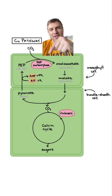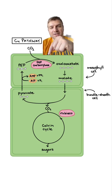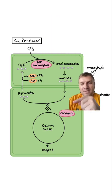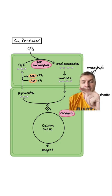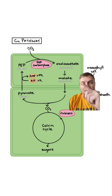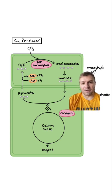Here's another way of looking at it. You can see the PEP carboxylase, which is going to make that four-carbon molecule, which is why it's called C4. CO2 will be produced when malate is converted into pyruvate, and that CO2 will go into the Calvin cycle. Basically, this process protects the plant from going through photorespiration.